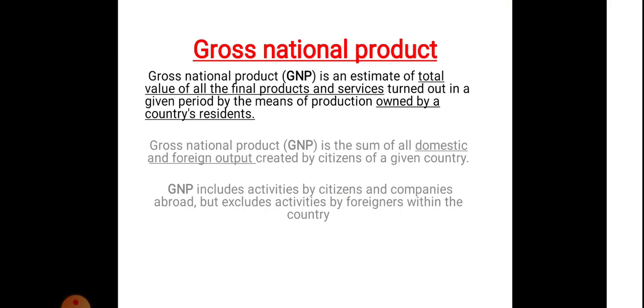Simple and easy: Gross National Product is the sum of all domestic and foreign output created by the citizens of a given country, whether the output is generated in a foreign country or domestically.